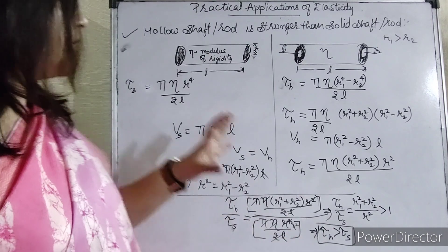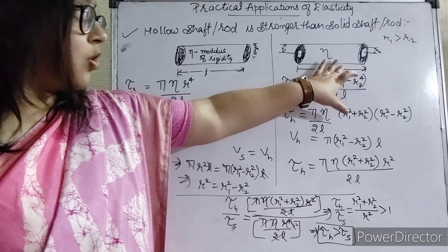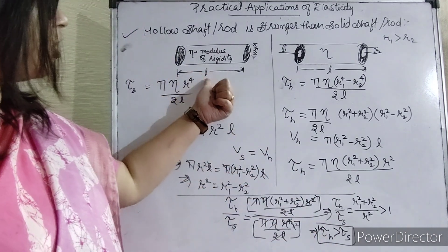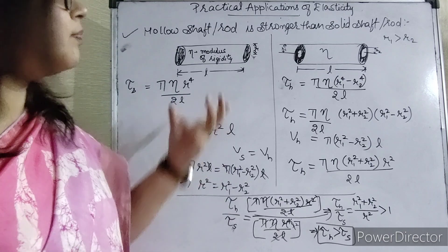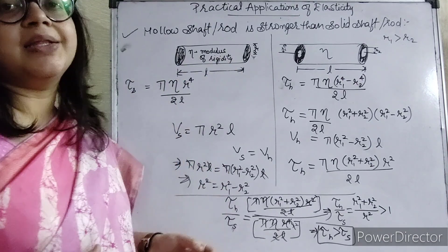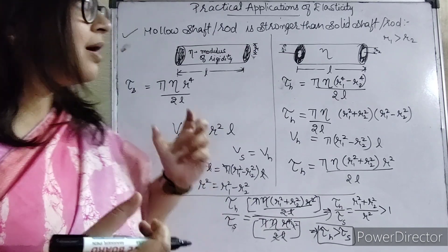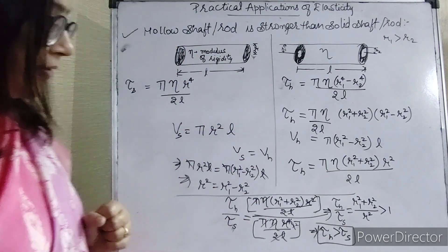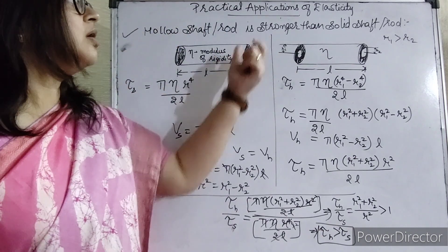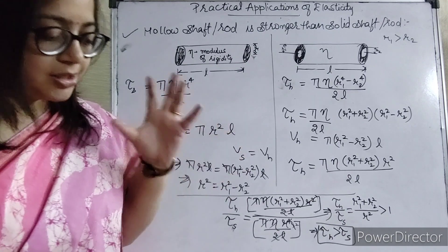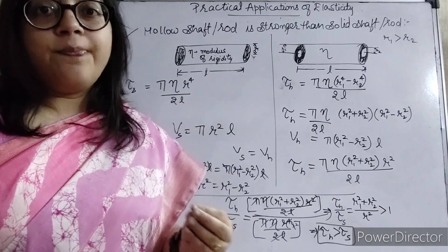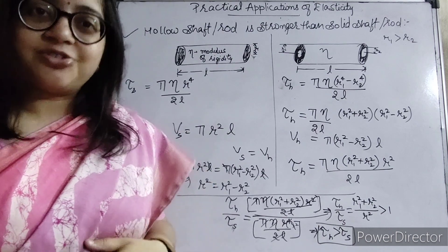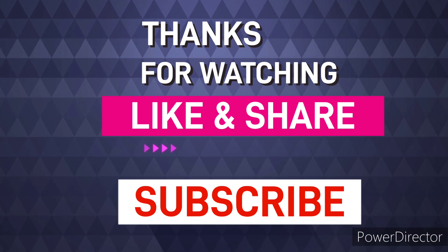So the torque required to bend a hollow rod of the same material, same length, and same overall volume is much greater than the torque required to bend the solid rod. We can therefore say that a hollow shaft or rod is stronger than a solid shaft or rod. We have discussed two practical applications of elasticity and derived the relevant relationships. That's all for today, thank you for watching — please don't forget to subscribe.